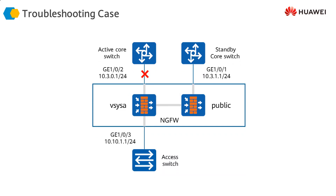Here is an example scenario: this link goes down and the virtual firewall — vCSA — is not passing traffic through this core switch. If this is the situation, what would be the possible testing steps we could do, step by step, based on the previous slide?